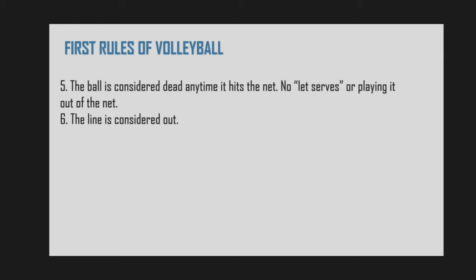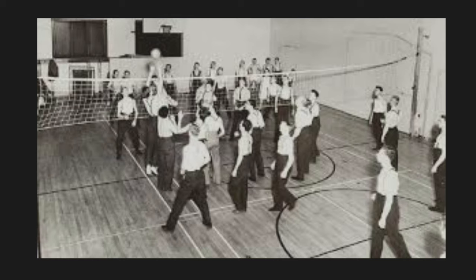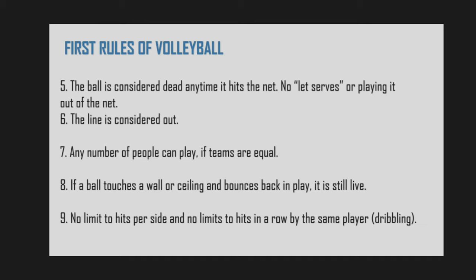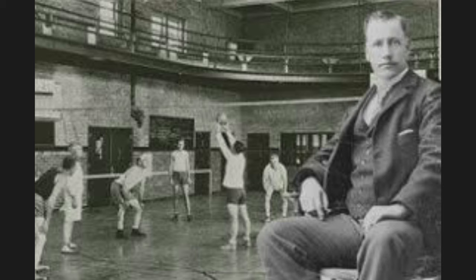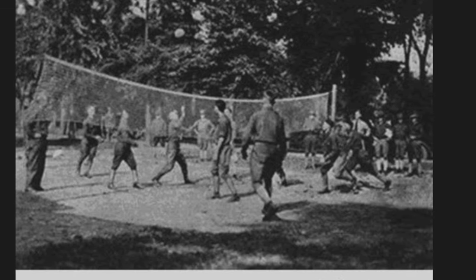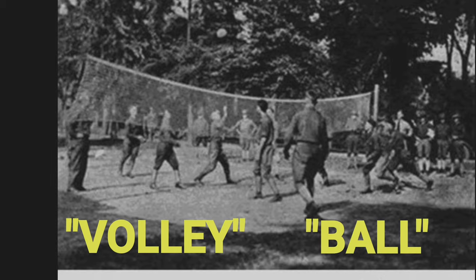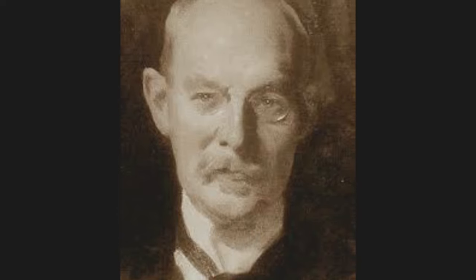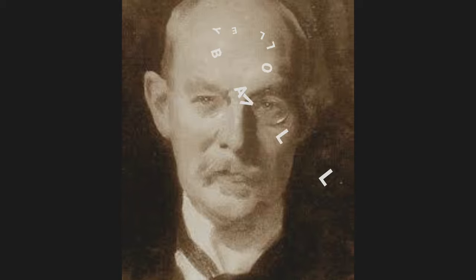Rule 5: the ball is considered dead any time it hits the net — no let serves or playing it out of the net. Rule 6: the line is considered out. Rule 7: any number of people can play, if teams are equal. Rule 8: if a ball touches a wall or ceiling and bounces back in play, it is still alive. Rule 9: no limit to hits per side and no limit to hits in a row by the same player or dribbling. Mr. Morgan announced his sport as 'Mintonette,' and his presentation included two teams of five men to demonstrate the game and its rules. After an observer, Alfred Halstead, noticed the volleying nature of the game at its first exhibition match in 1896, played at the International YMCA Training School — now called Springfield College — the game quickly became known as volleyball. It was originally spelled as two words, 'volley' and 'ball.' Dr. Alfred Halstead suggested renaming it to volleyball, to better reflect the objective of the game: to volley the ball back and forth over the net. The two words were eventually combined to form 'volleyball.'